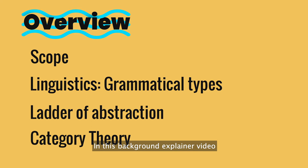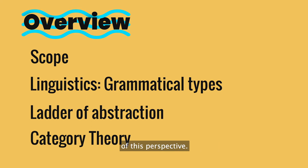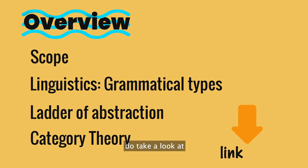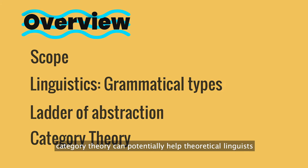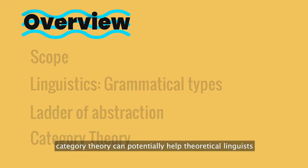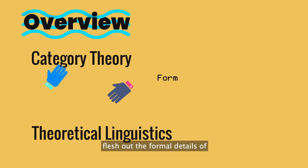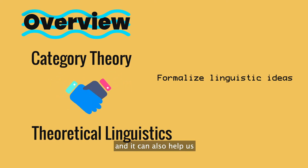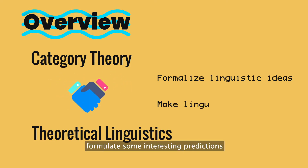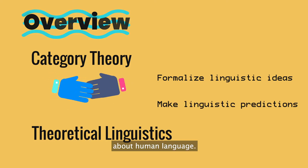In this background explainer video, I won't go into the detail of this perspective, but if you're interested, do take a look at my blog post or extended abstract. In short, my study shows that category theory can potentially help theoretical linguists flesh out the formal details of a number of existing ideas about grammatical types, and it can also help us formulate some interesting predictions about human language.